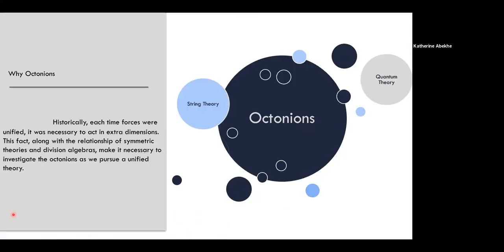So why octonions, or in fact, why unification or string theory? It's not intuitive at all to imagine the world with an eight-dimensional structure in a four-dimensional world, but it does become a little bit more apparent when we think of it in context of string theory, which is a physics model that predicts nine spatial dimensions.